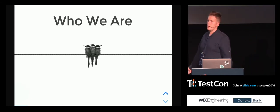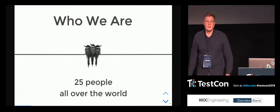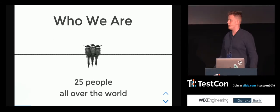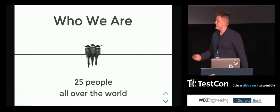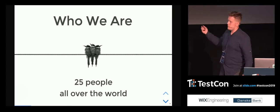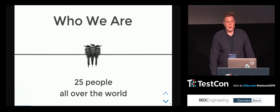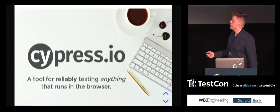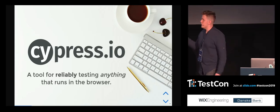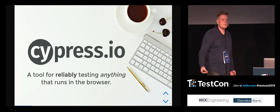Today I'm presenting the Cypress team for you. Who are we? We are just 25 people all over the world trying to make the software world a little bit friendlier for everybody — actually 26 already, because yesterday a new engineer joined our team. There are 19 engineers and a lot of people. You've all heard about cypress.io — as you can see on the slide, this is a tool for reliably testing anything that runs in the browser.